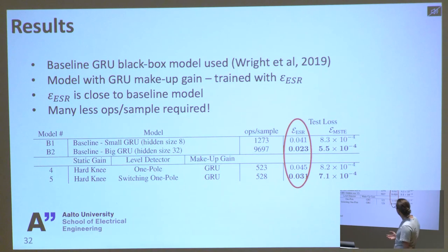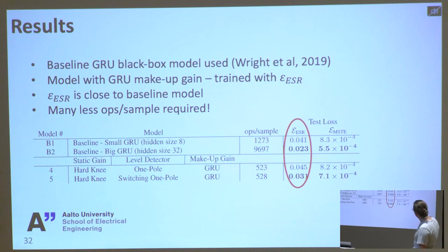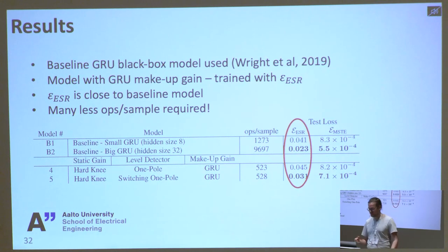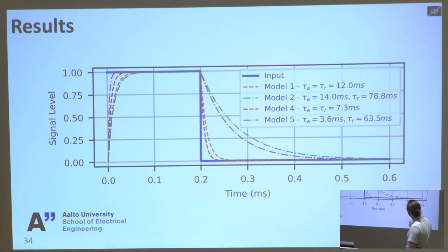Next, I have this model which has a GRU makeup gain module at the end. The baseline is still outperforming our model, not by a huge amount. The model at the bottom has about 10% of the number of operations per sample at runtime, and it also has nicer user controls that people can use, unlike the baseline model. You can also see some examples of the learned attack and release times of the filter. Where there's just a single parameter, it learns quite a short attack and release time. Where it has independence, it goes for a fast attack and then slower release.